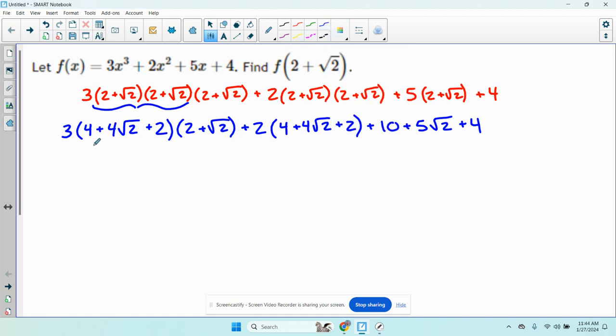I still have to FOIL these two, so I'm going to leave the 3 where it is. I'm going to distribute. I'm going to multiply the 4 by both of these, then the 4 root 2 by both of these, then the 2 by both of these. So 4 times 2 is 8. 4 times root 2 is 4 root 2. 4 root 2 times 2 is 8 root 2.